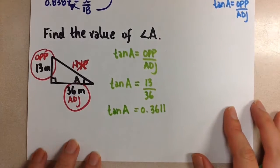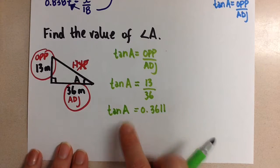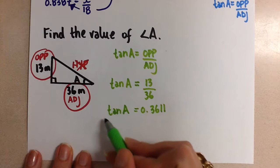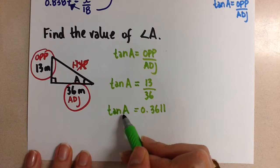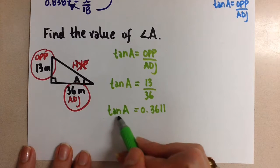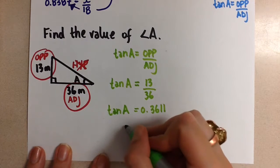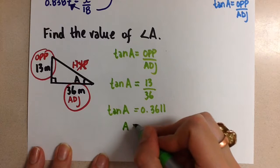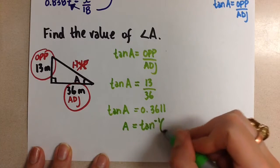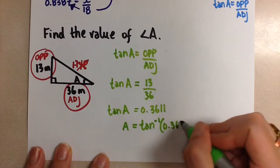So here we need to get the A by itself. To get the A by itself, we do the inverse of this operation here, which is tangent. The inverse tangent undoes the tangent on this side. So we're going to be left with A equals the inverse tangent of 0.3611.